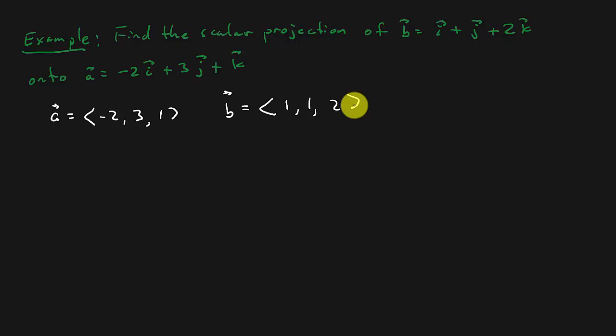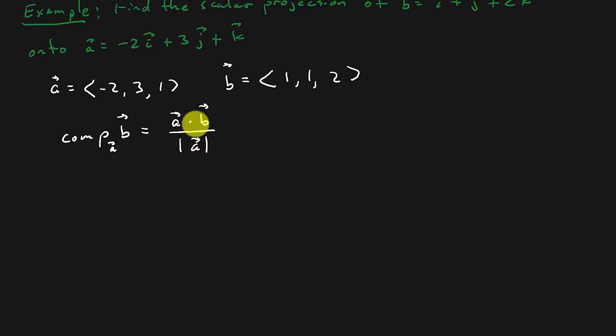So the scalar projection, let's write the formula down again. So it's the dot product of the two divided by the magnitude of A. So we've got to find the dot product, and we've got to find the magnitude of A. So let's just find the magnitude of A first. That's going to be the square root of negative 2 squared plus 3 squared plus 1 squared. And so that magnitude is going to give us the square root of 14.